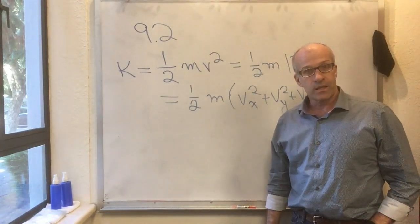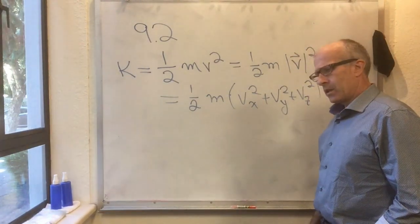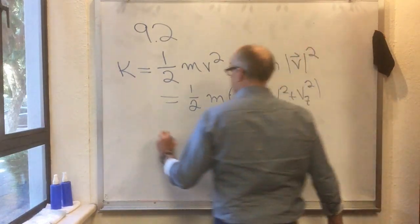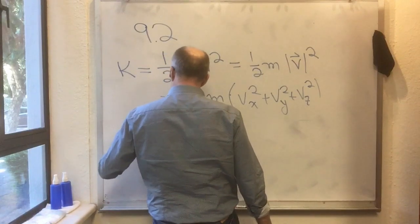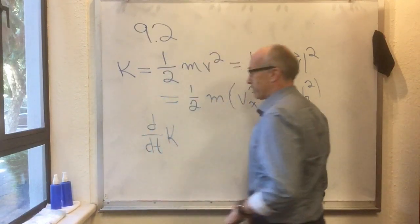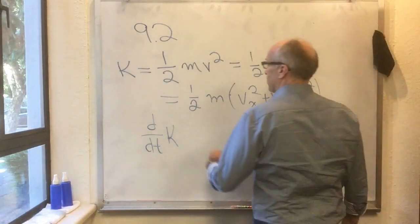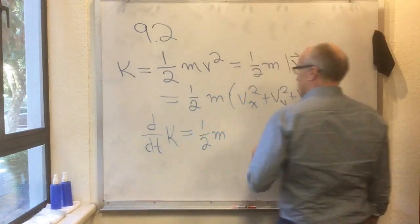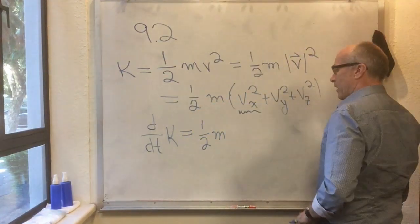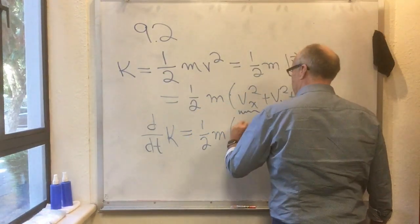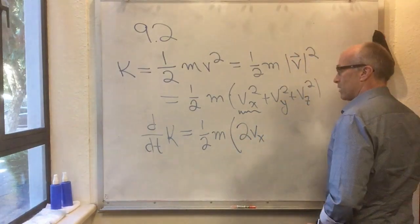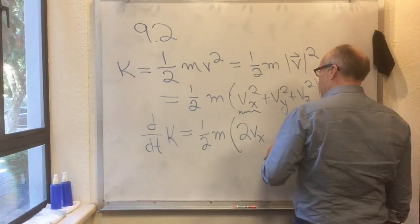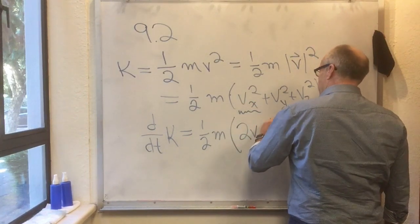Now here's an interesting thing: we can ask what's the time derivative of this thing. So d by dt of K equals one-half m times d by dt of something squared. The derivative of something squared is twice that thing—the chain rule says you get twice the thing to the first power times the derivative of the thing itself.